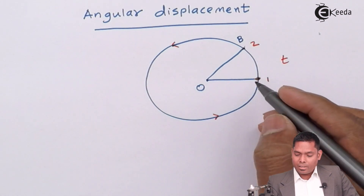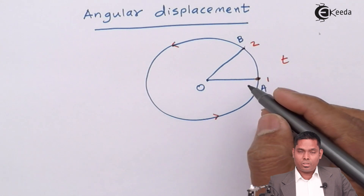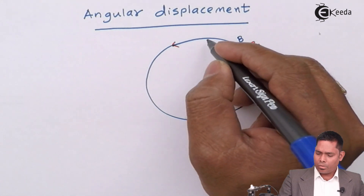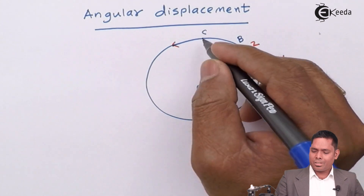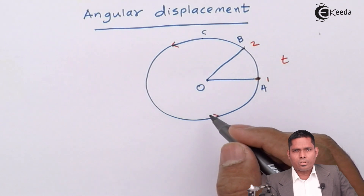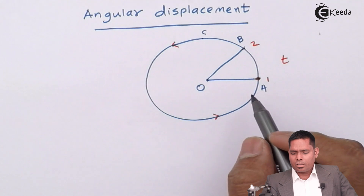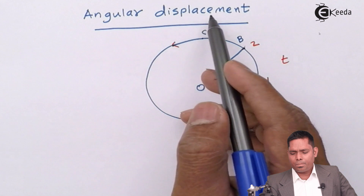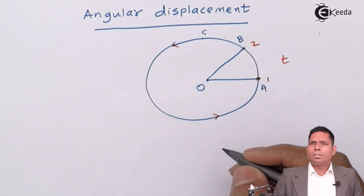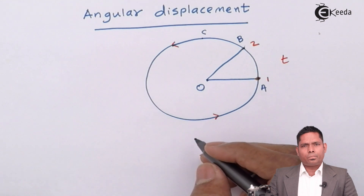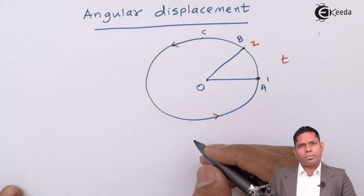So how do you describe the motion if the distance is constant? If it moves from here to any other position C, its linear distance will not change. Then how do you describe the motion? This is described by angular terms. The displacement is not linear; we will define it in terms of angular position and angular displacement.